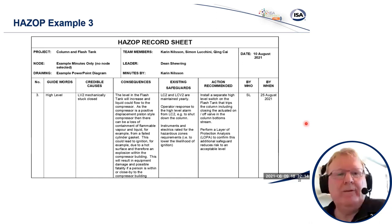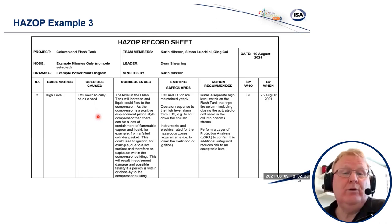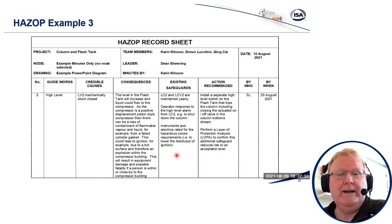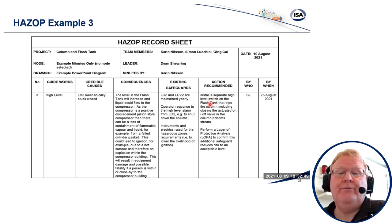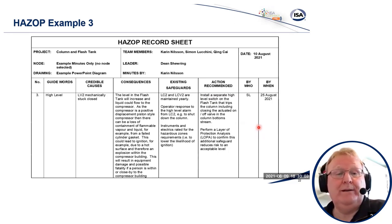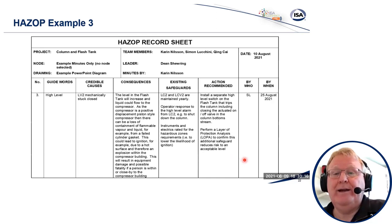Recapping how the technique flows: we explore credible causes for deviations from the design intent. Once we have a credible cause, we go through the consequences to the worst-case outcome — harm to people, environment, property, and the business. We assess existing safeguards and whether they are adequate. If the team does not believe the existing safeguards are adequate, they allow approximately 10 minutes to solve it. If solved, the action says 'install.' If they cannot solve it within 10 minutes — for example, further calculations are required — the action says 'review the need' or 'perform an assessment,' and the study keeps flowing. Spending too long trying to solve an action will kill off creativity, and the HAZOP will suffer.